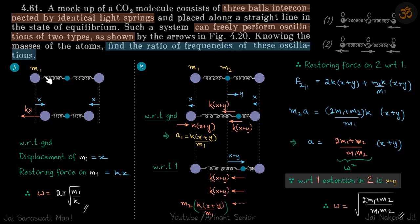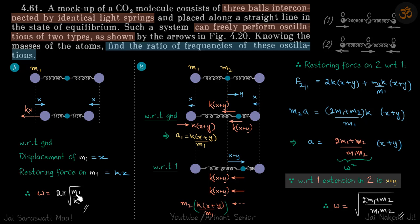To solve this, the first part is pretty straightforward, but the second part we are going to solve with respect to particle 1, the same concept used in problem 4.58. For the first mode, since carbon is at rest, let the displacement of each oxygen atom be x. The force on them will be kx, so with respect to ground, the restoring force is kx, which directly gives ω₁ = 2π√(k/m₁).